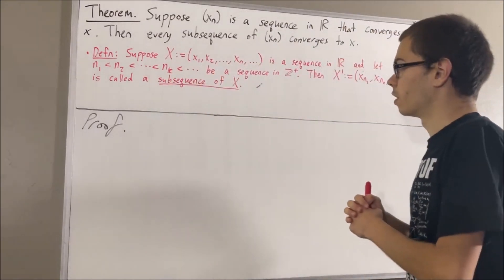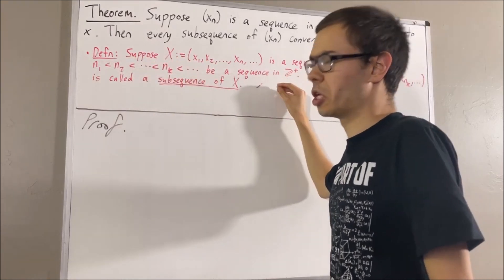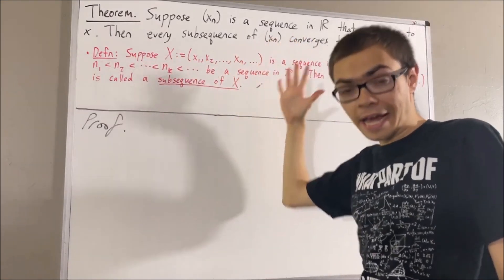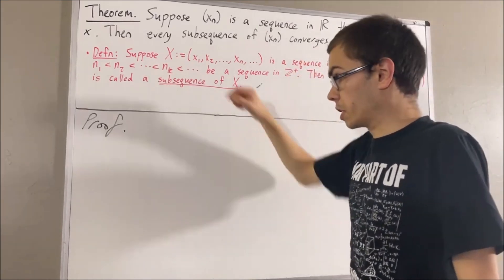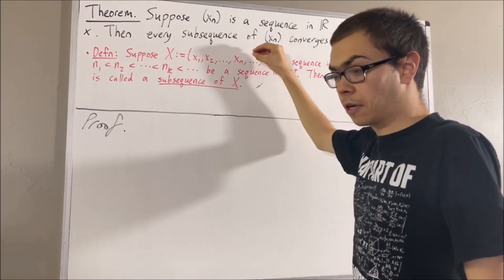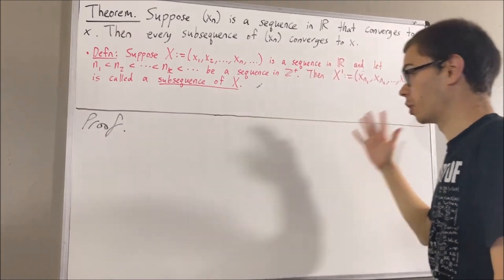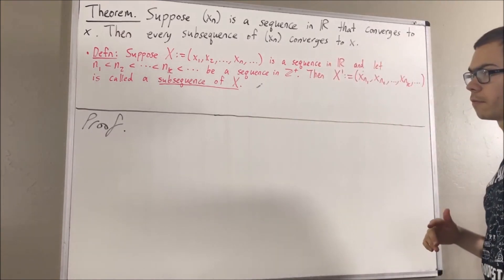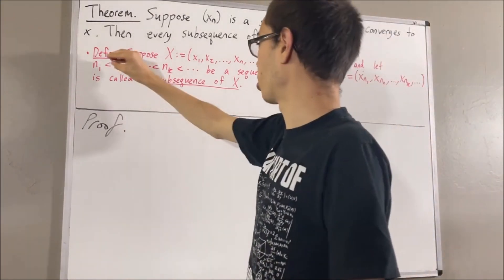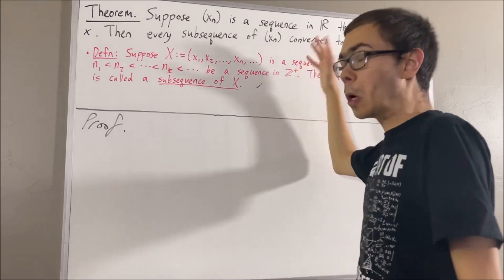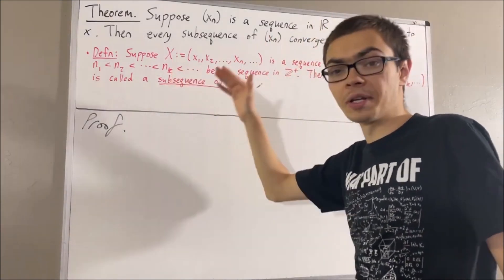So, for example, if the strictly increasing sequence of positive integers was 2, 4, 8, 16, 32, then the subsequence would be x2, x4, x8, x16, x32, and so on and so forth. Now, a property of strictly increasing sequences of positive integers is that for all positive integers k, nk is greater than or equal to k.